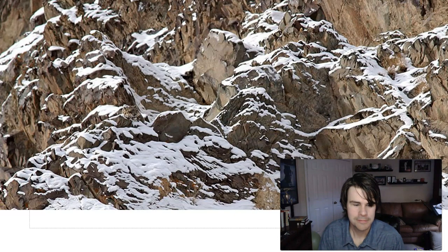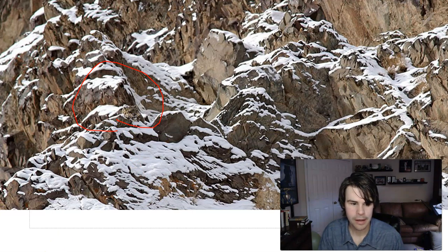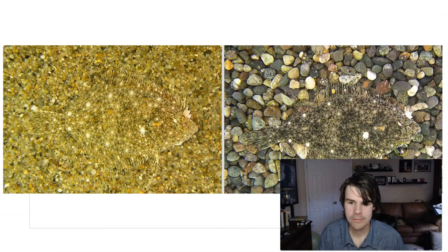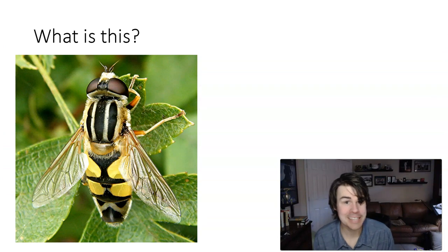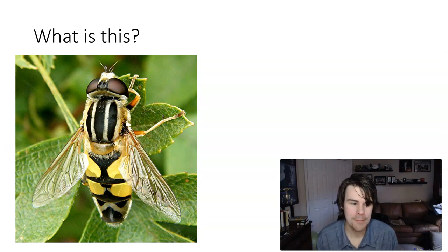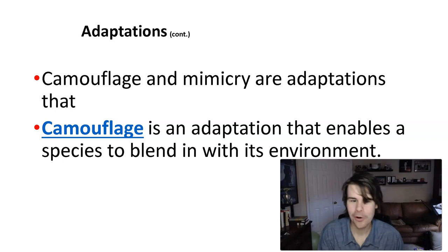Can you see it? There's a mountain lion right there. And flounder — flounder does not look like it does in The Little Mermaid. What's this? You might be quick to say bee, but it's not — it's a hoverfly, actually, and it's harmless. This is called mimicry. There's camouflage and also mimicry that organisms use. Camouflage is an adaptation that enables a species to blend in with its environment. Mimicry is another one.